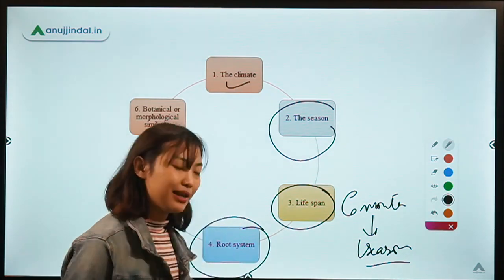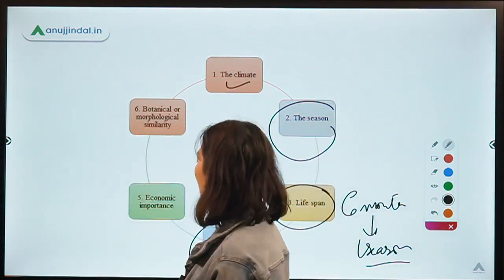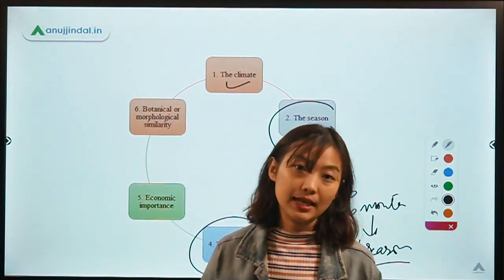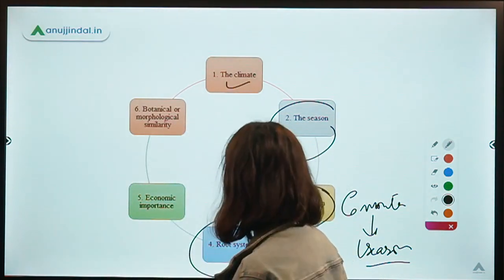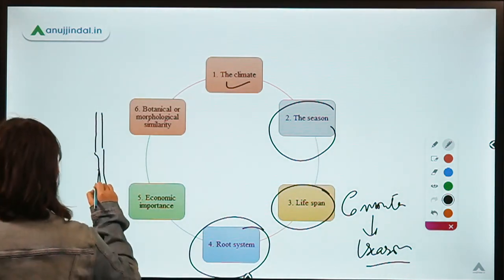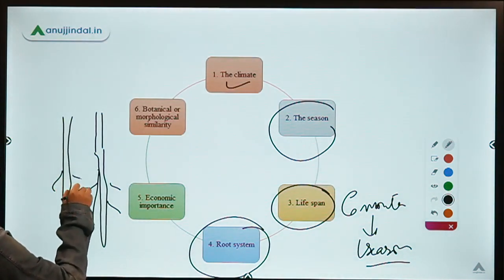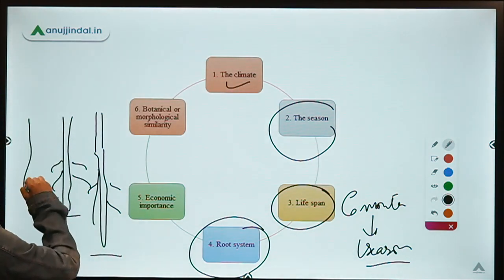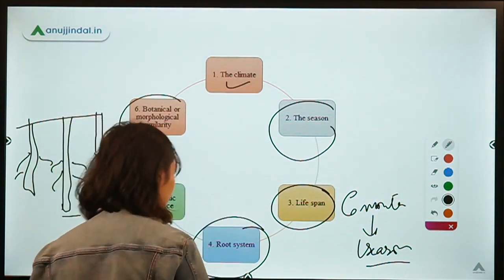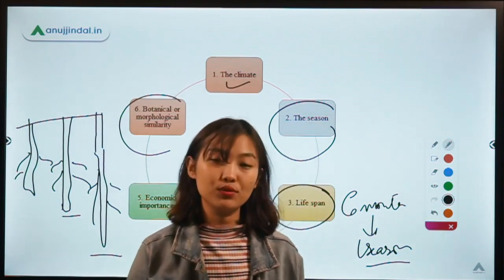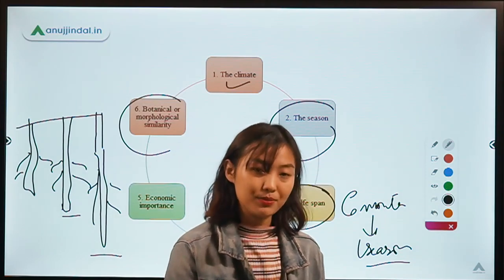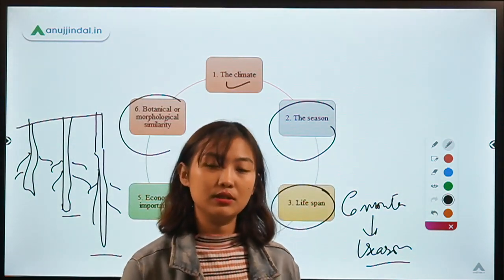Moving on to the root system — every plant or crop has different types of root systems, and they can be classified into three: deep rooted, where the roots are really long; medium rooted, where the length is medium; and short rooted plants. The last classification basis is morphological and botanical similarity. This is one of the most important and oldest methods of classification. Through botanical classification, a person is able to group crops into a certain family, group, or genus. For example, cereals like rice, wheat, and barley all belong to the same group because they share morphological and botanical similarity.